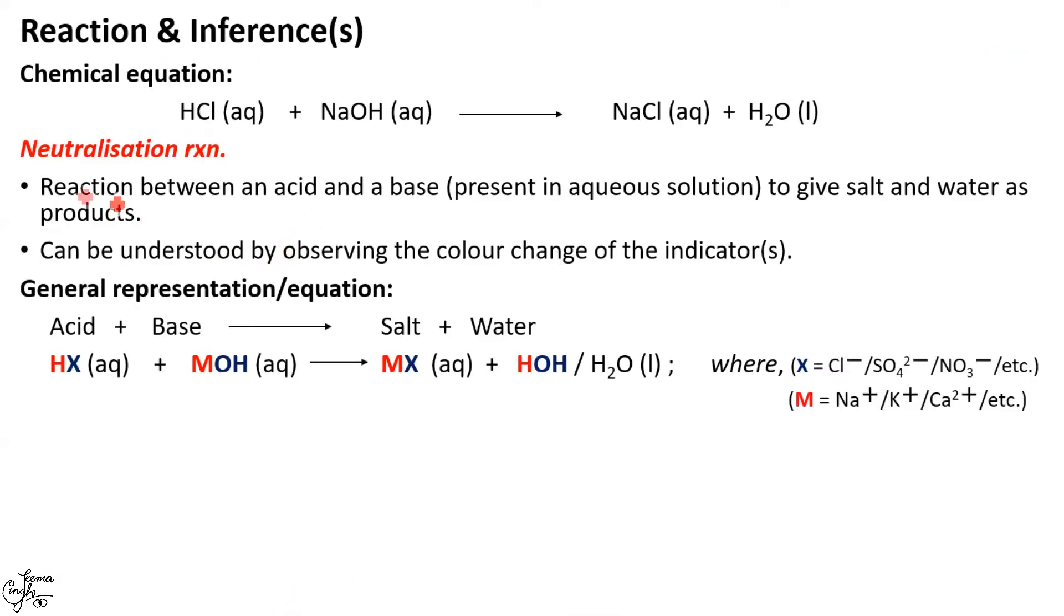So, coming on to the equation involved in this activity, we see that HCl and sodium hydroxide react with each other to produce salt, this is sodium chloride and water. This reaction is known as neutralization reaction and can be defined as the reaction between an acid and a base, this is important, present in aqueous solution to give salt and water as products. As said earlier, these reactions can be understood by observing the color change of the indicator. In this activity, we had used the indicator phenolphthalein.